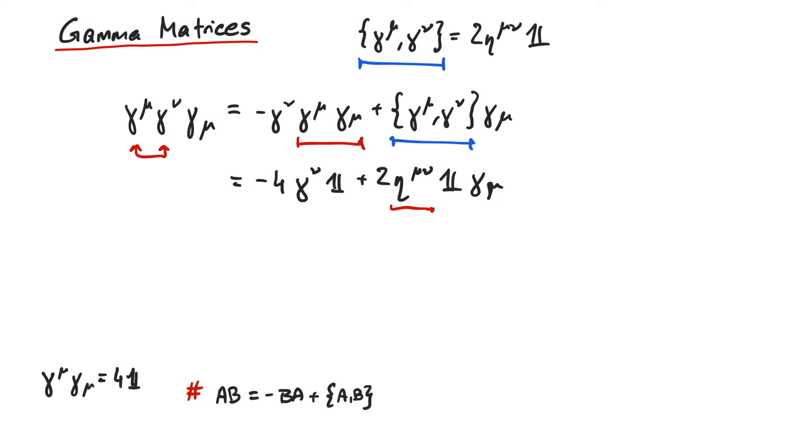Next we use the Minkowski metric to raise the index of the gamma mu here. So we write this as minus 4 gamma nu plus 2 times gamma nu. And the last step is easy because this is now just minus 2 gamma nu.